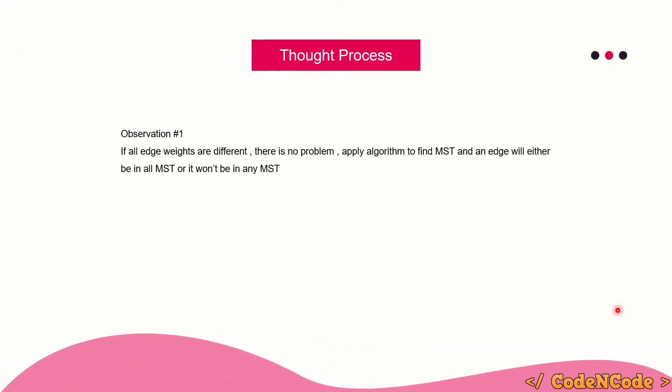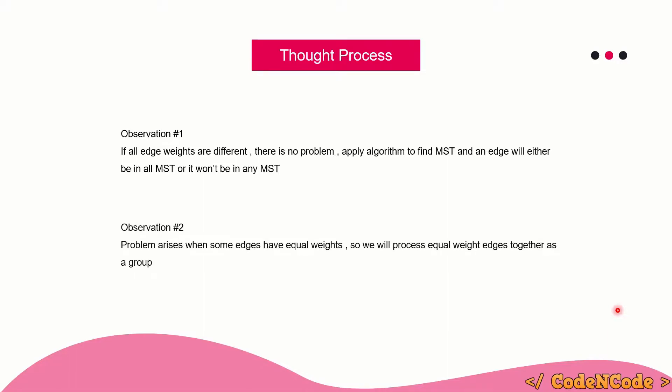Observation one: if all of the edges are of different weights, then there is no problem at all. Simply apply the MST algorithm, find the MST, and the edges that are present in your MST — for those you can print 'any', and for those which are not included in the MST you can print 'none'. The problem starts only when we have edges with equal weights.